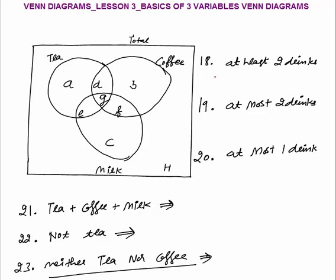At least two drinks means minimum two drinks — or more than two. So we count those who consume exactly two drinks: D plus E plus F. Plus more than two drinks means three drinks, which is G. So the answer will be D plus E plus F plus G.